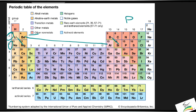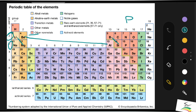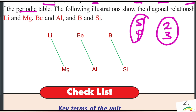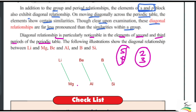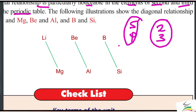This is the diagonal relationship — some form of similarity that is the same as the diagonal relationship between elements.